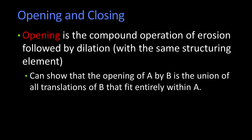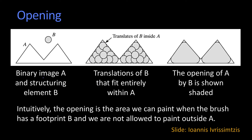That's kind of complicated and wordy — it's much easier to see in a picture. So here's our binary shape A, and this is our structuring element B. The opening is all the places, all the translations within A, where you can fit B. When you do that, you get this result, and you'll notice it has broken the connection between those two triangles and also rounded the edges. It's broken them because B is too small to fit there, and the rounding is due to the shape of B.